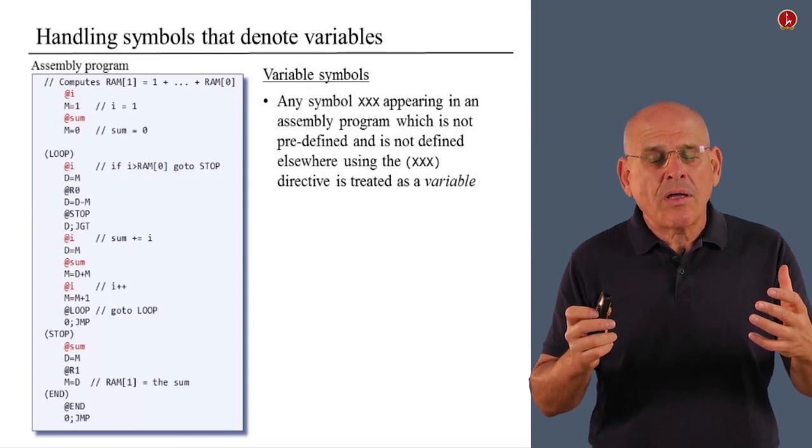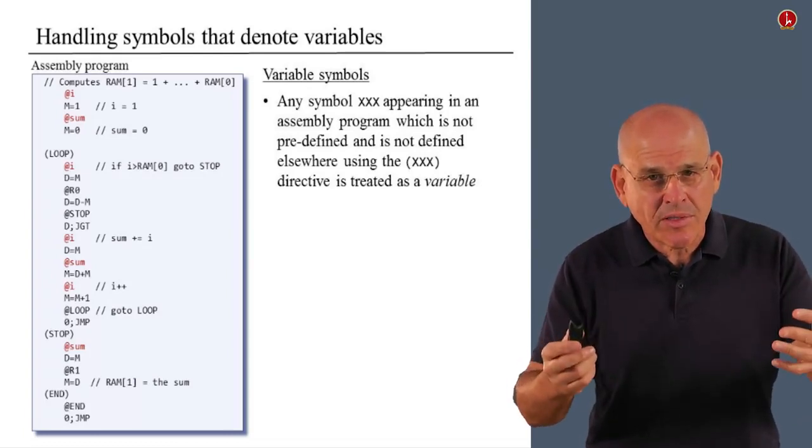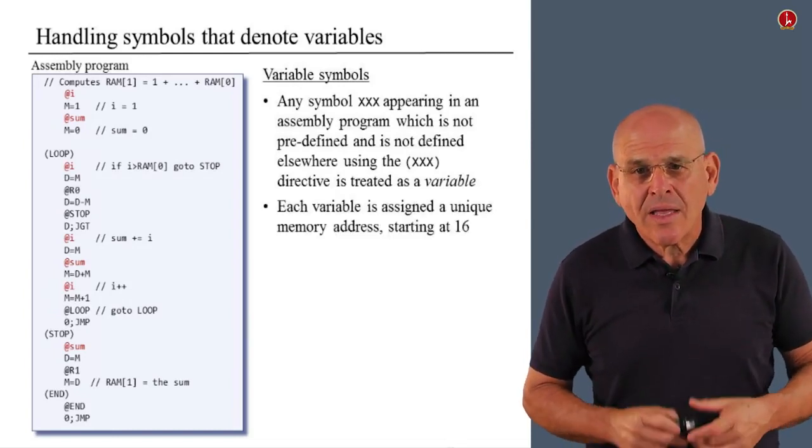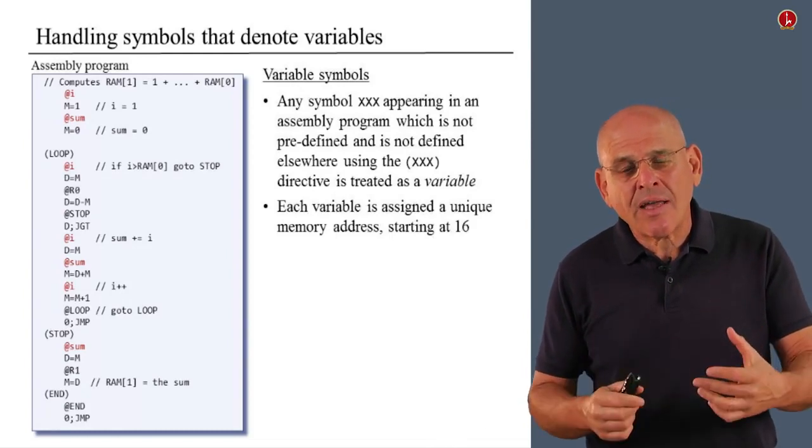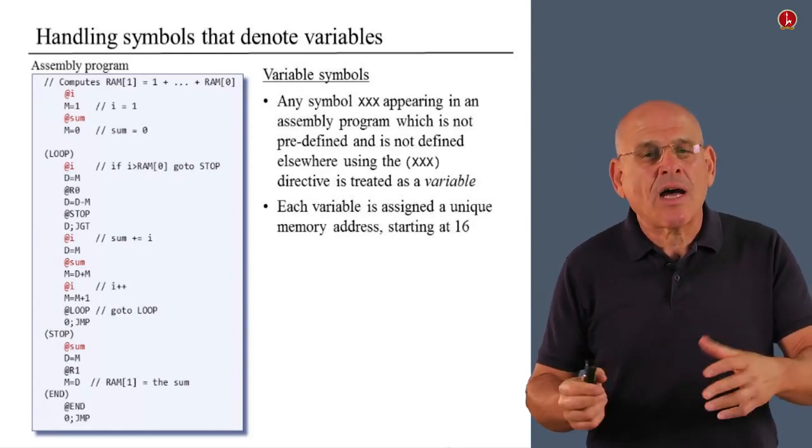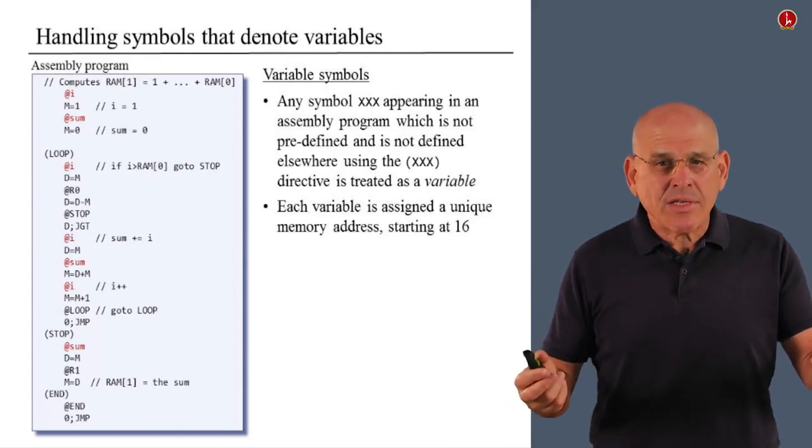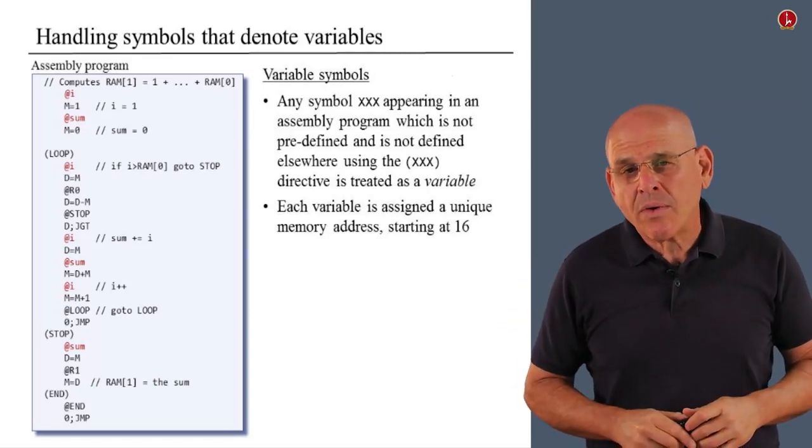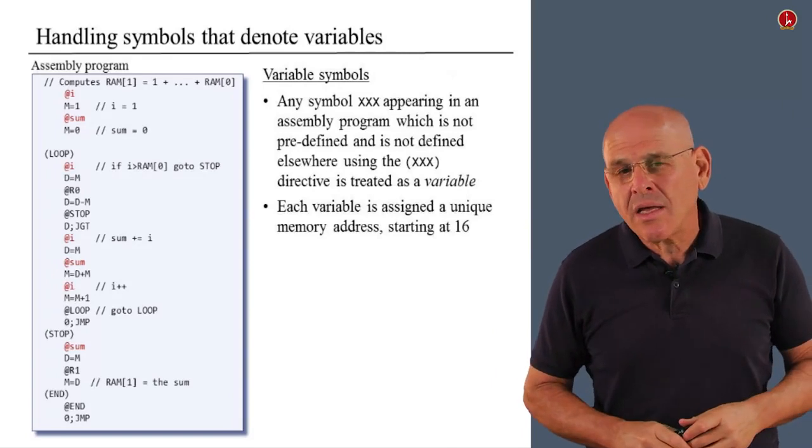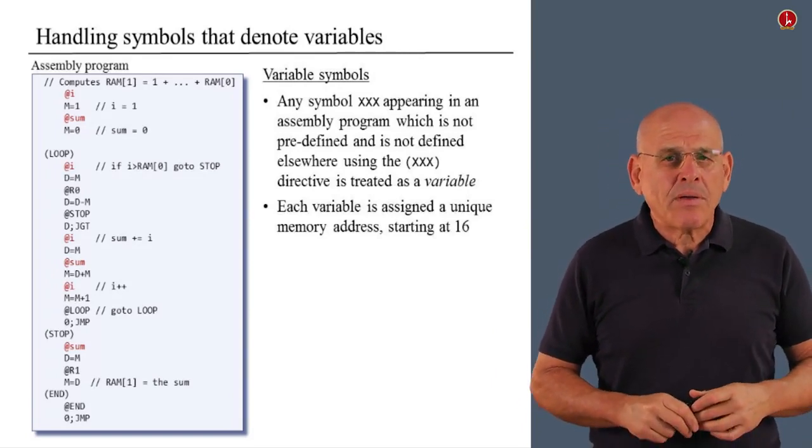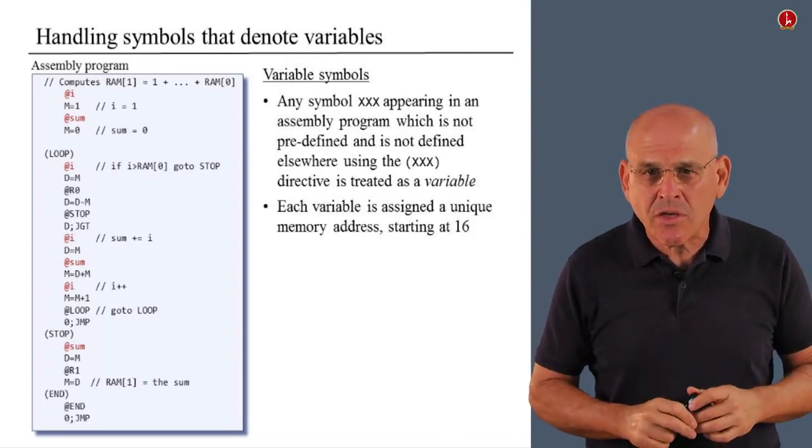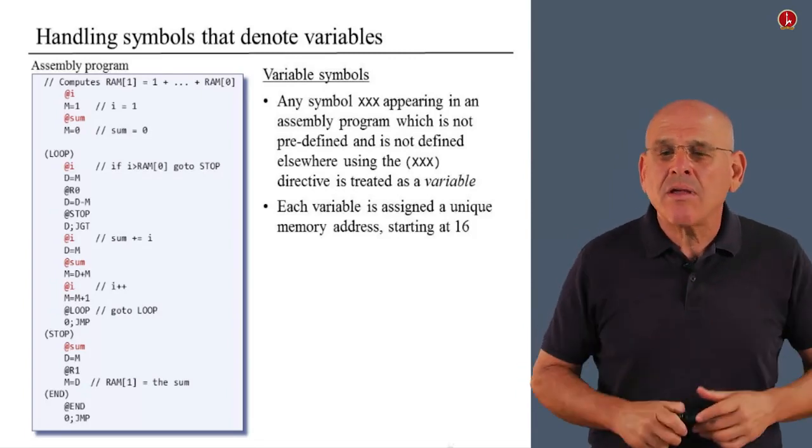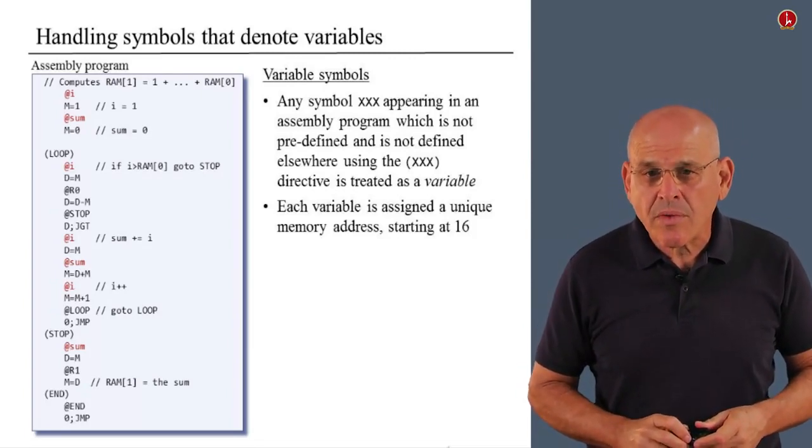All right, so we know how the programmer expresses variables in the way that I just described. How do we handle these variables if we are the assembler? Well, each such variable is assigned a unique memory address starting with 16. You may ask yourself, why 16? Well, this is a decision that Noam and I made when we developed this language and this assembler, and it's not exactly an arbitrary decision, as you will see later on. But for now, you can treat it as an arbitrary decision. So variables are assigned to memory from address 16 onward.